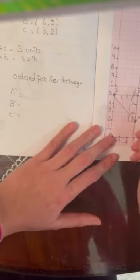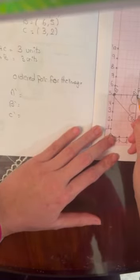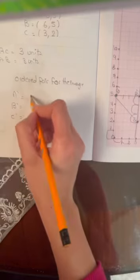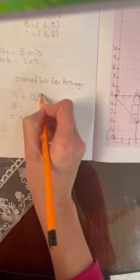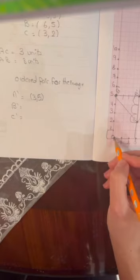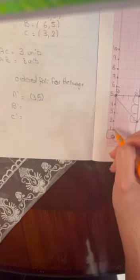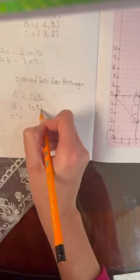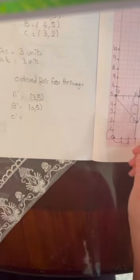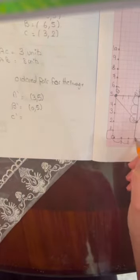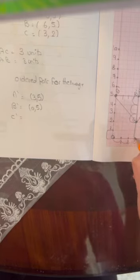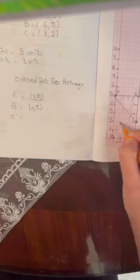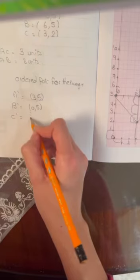How will we get it? A dash from down to up: three and five. I will write it three, five. B dash here, down to up: zero and five. C dash from down to the top, from three till I reach two. Three and two. This is called ordered pair.